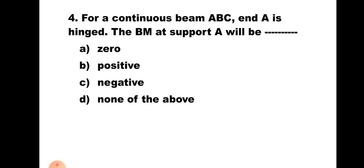Question number four. For a Continuous Beam ABC, end A is hinged. The BM at support A will be: A. zero, B. positive, C. negative, D. none of the above. When the support is hinged or simply supported, the moment at that support will definitely be zero. Hence the correct answer is A, zero.